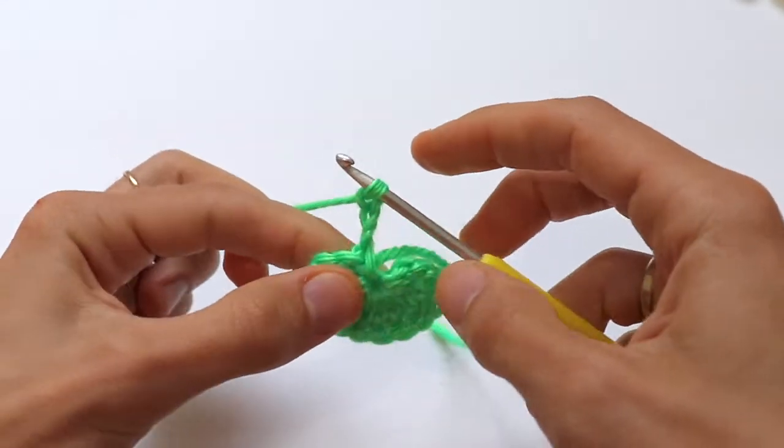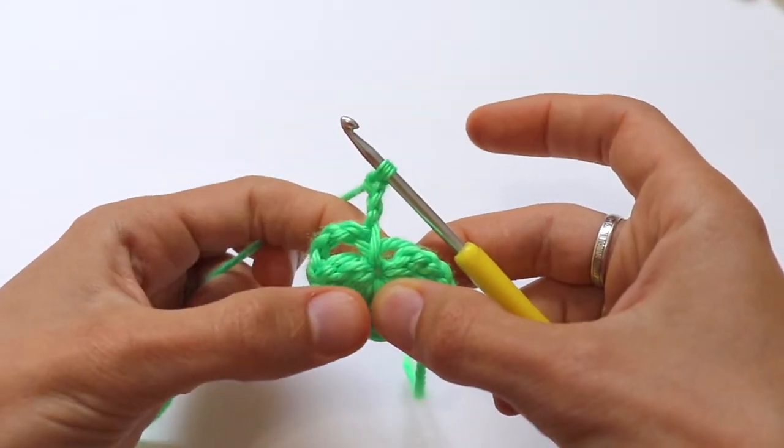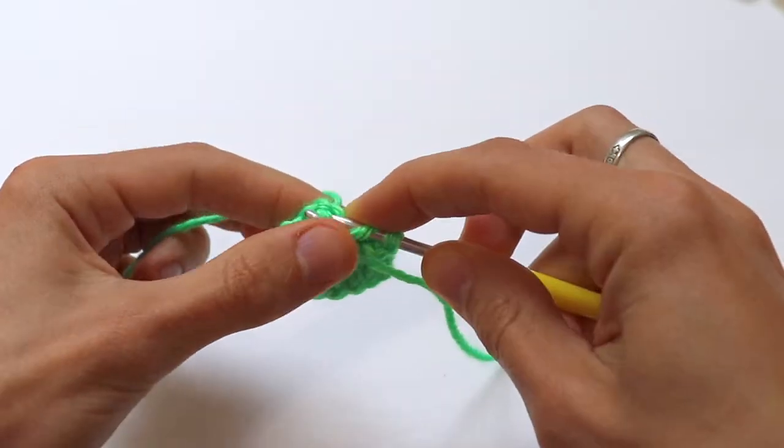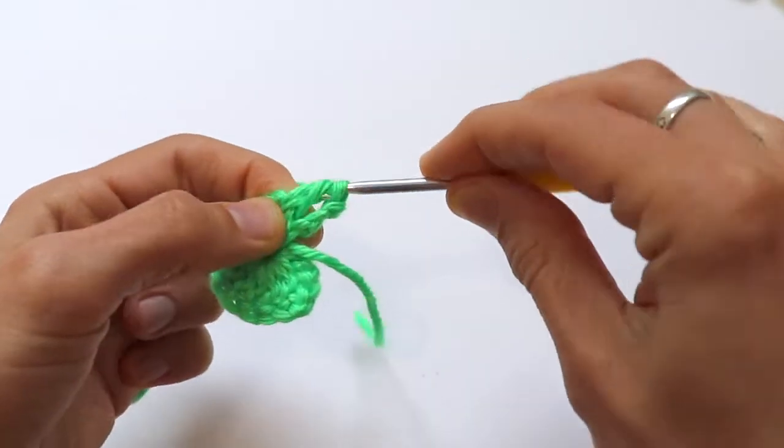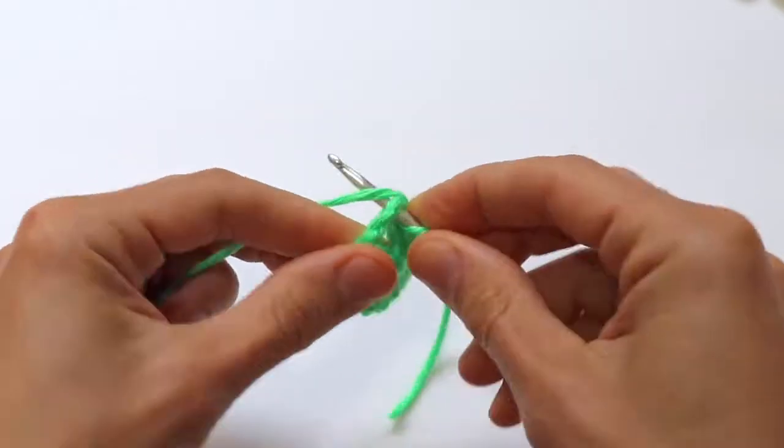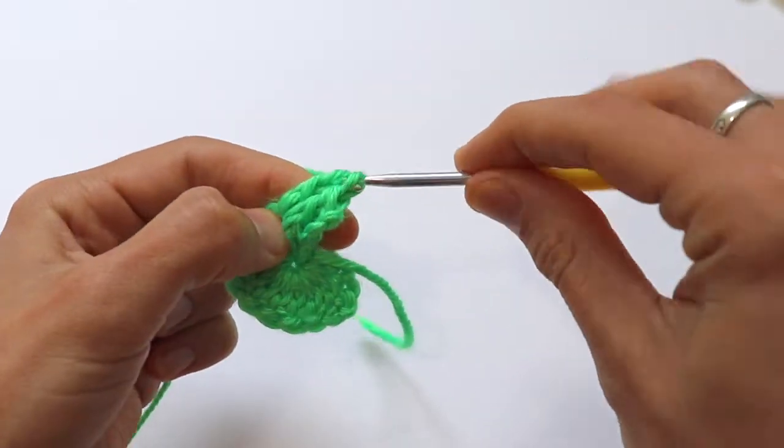Flip it over and find the chain three space and repeat the same pattern. Make eight double crochet into the chain space of three.